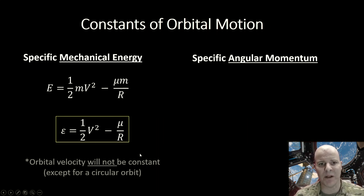And what this implies about our orbit is that our orbital velocity will not be constant because we're trading this potential and kinetic energy. The only time that this will not be the case, where we will have a constant velocity, will be in the case of a circular orbit.